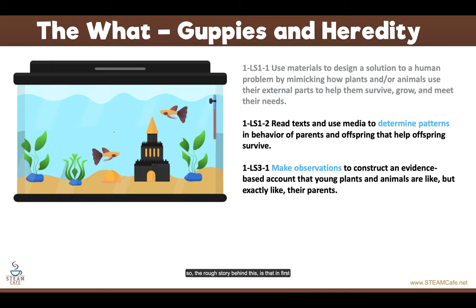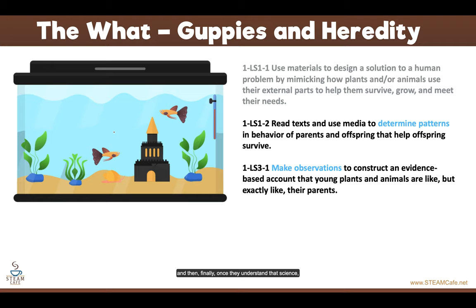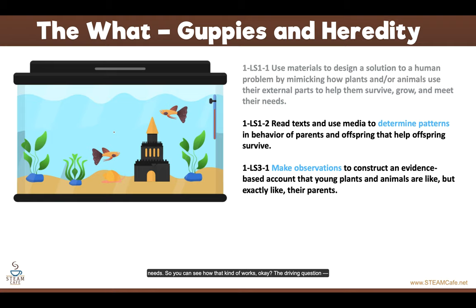When kids study guppies, first grade teachers set up a tank and breed them. By doing that, kids determine patterns and make observations about the plants and animals in the tank. Once they understand the science and have acquired knowledge from that experience, they can then do LS1-1 — take what they know and design a solution to a human problem by mimicking how plants and animals use their external parts to help them survive, grow, and meet their needs.